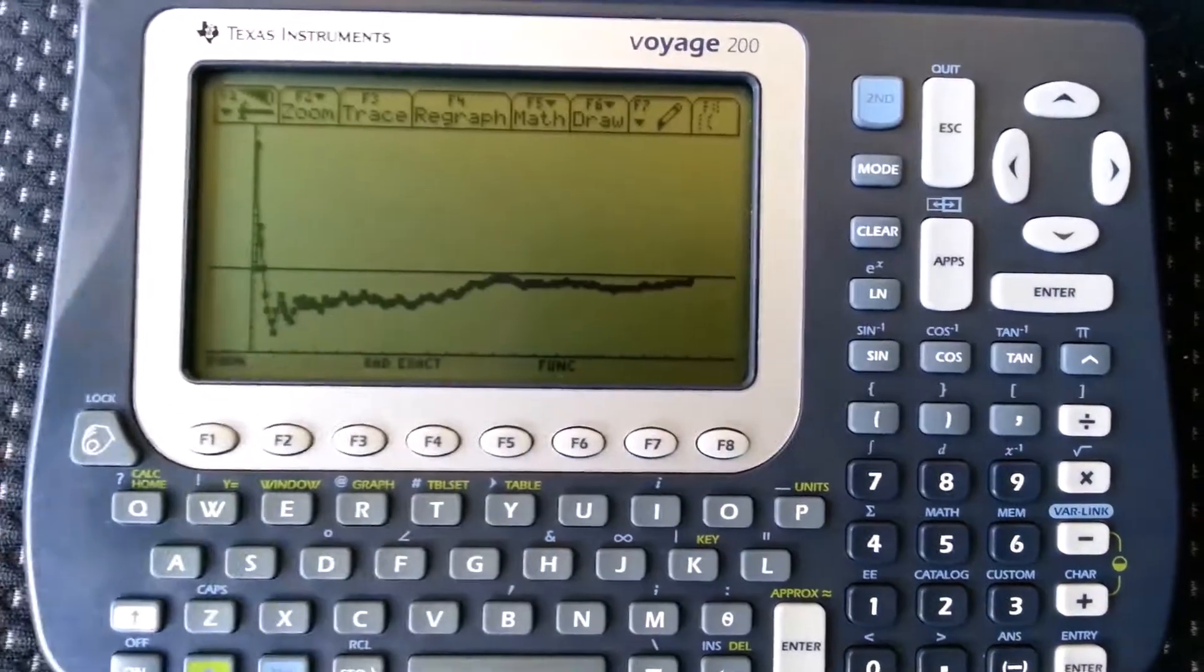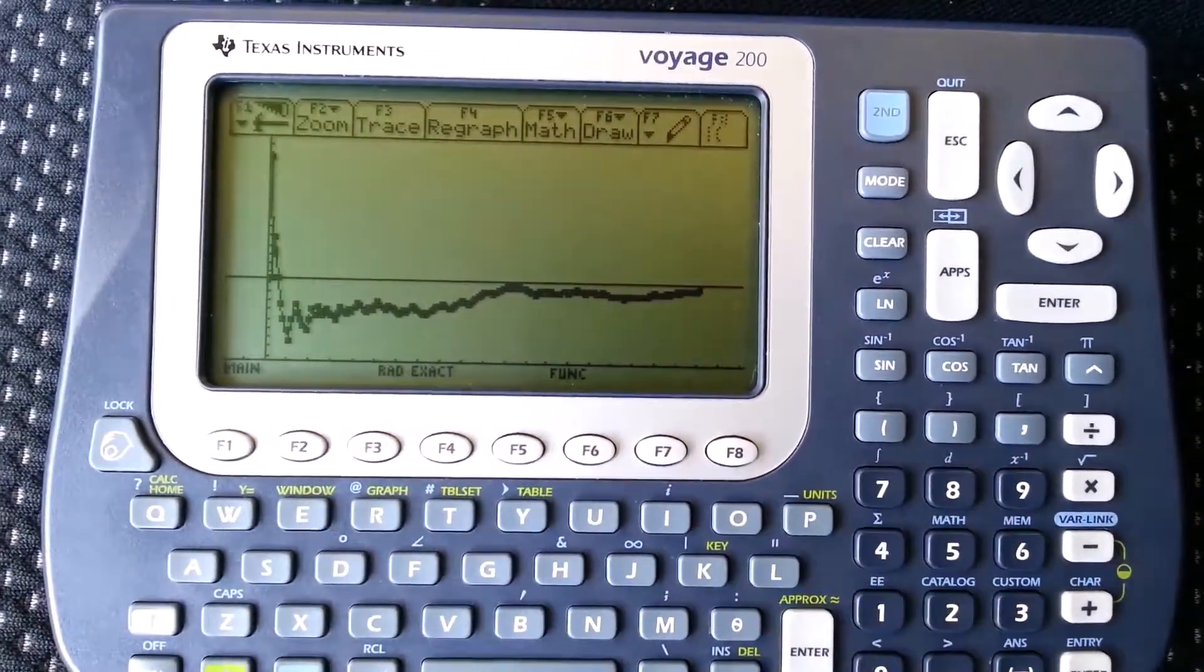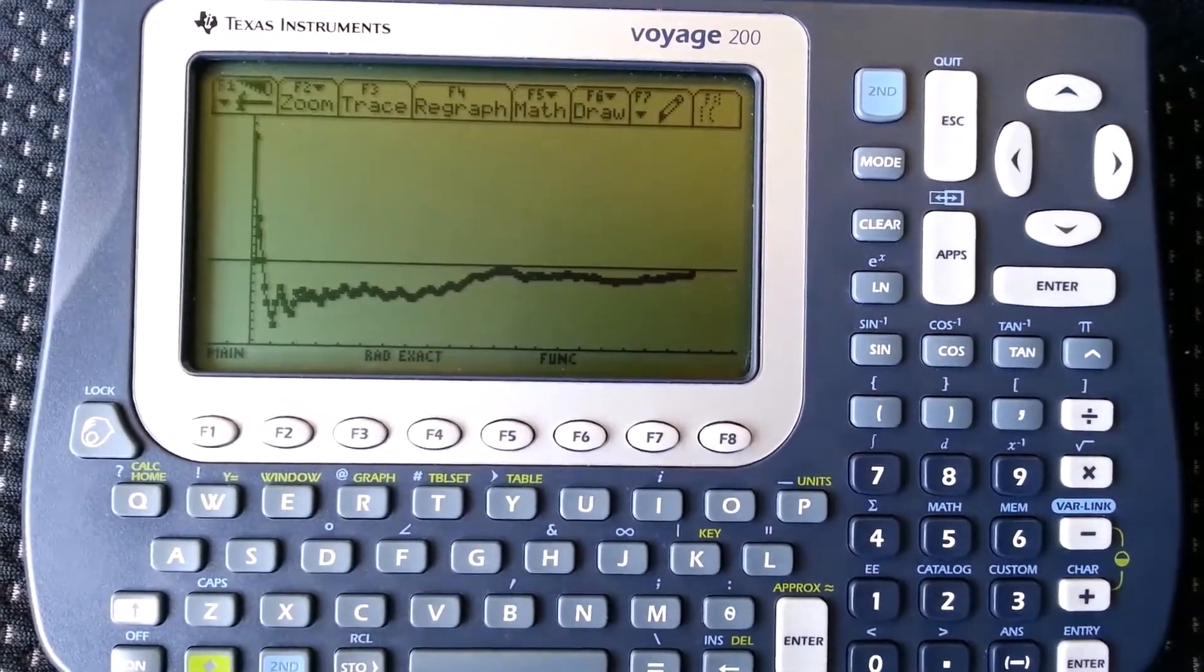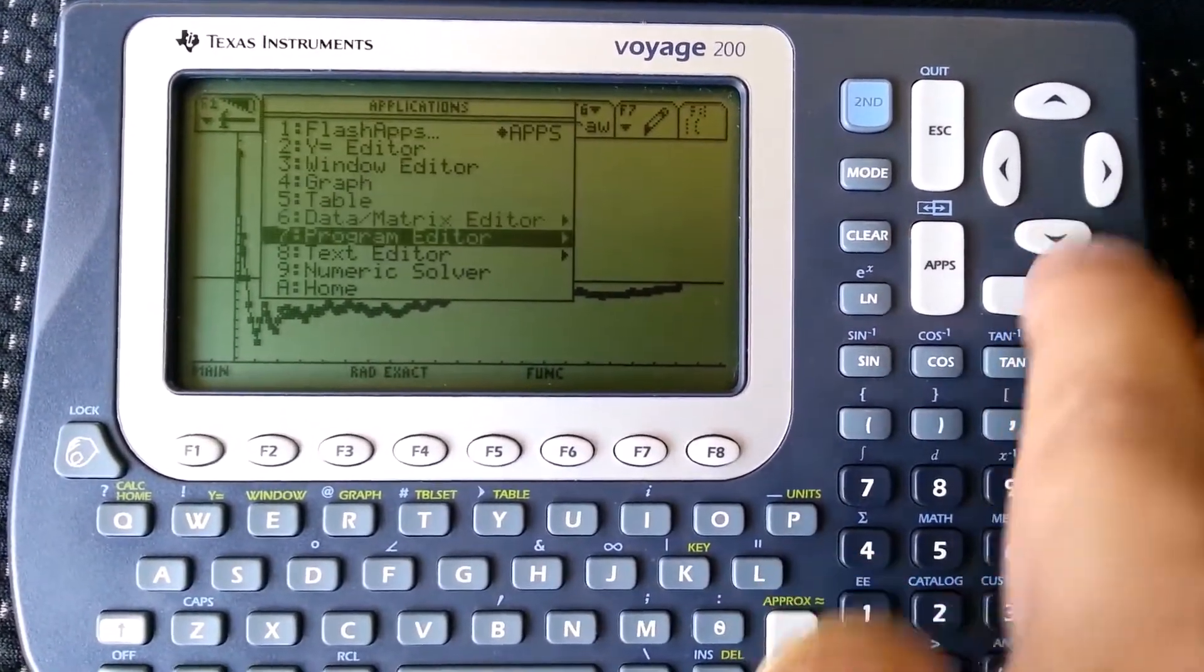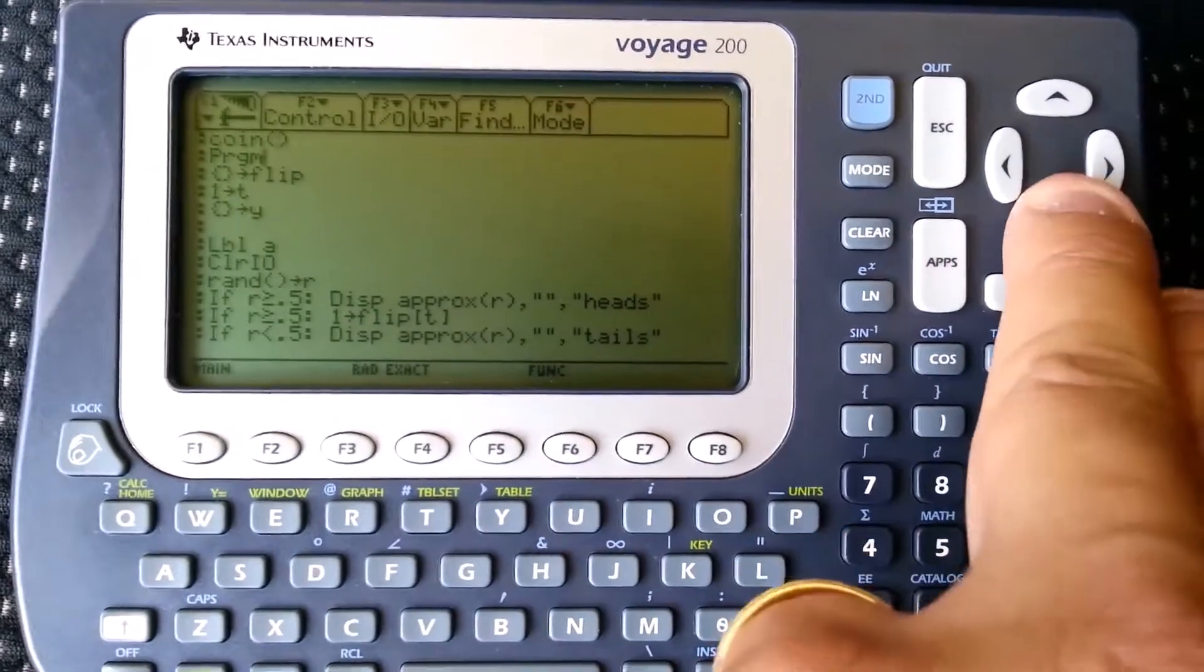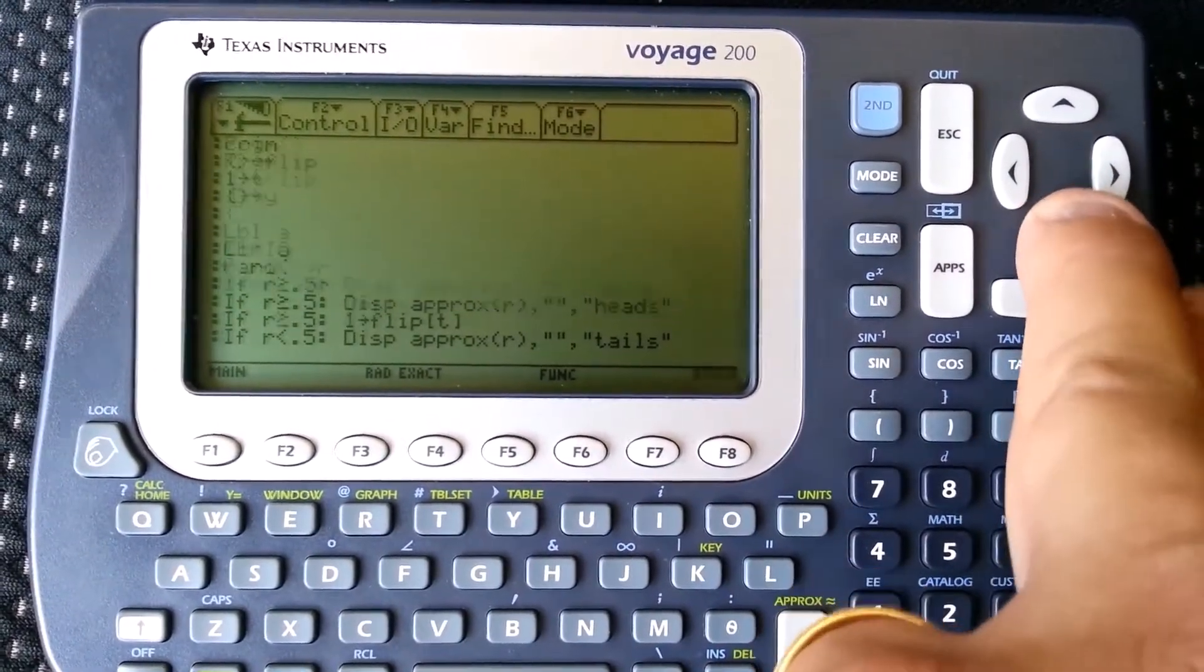So anyways, I was just showing how you could use kind of basic probability stuff, the random function, and use the basic programming which we found in the program editor to kind of make it a little more customizable, and then how to do a basic graph with data and a line.